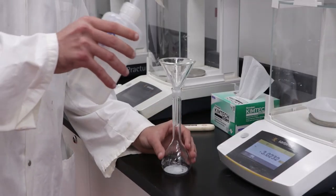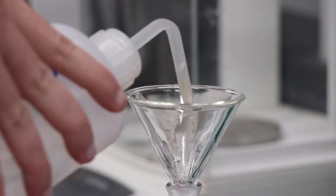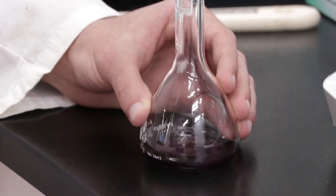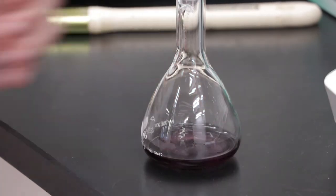Before you leave the balance room wash any solid adhering to the funnel down the volumetric flask with a stream of distilled water from your wash bottle. Return to your bench to complete the preparation of the solution.